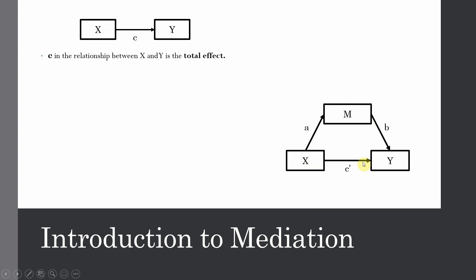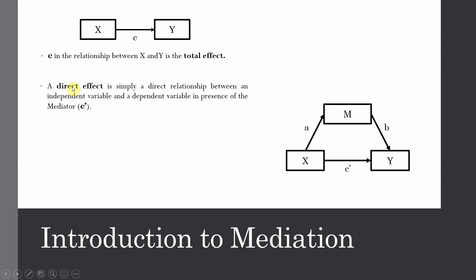Here, the relationship between X and Y is represented by C complement, and this relationship is referred to as the direct effect, because some of the effect may be passing through this other variable — the mediating variable. A direct effect is simply a direct relationship between an independent variable and a dependent variable in the presence of the mediator, represented by C complement. Without the mediator, it was just the total effect.